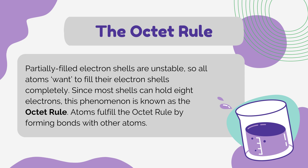The octet rule, also known as the rule of eight, is a fundamental principle in chemistry that governs the behavior of atoms during chemical bonding. It states that atoms gain, lose, or share electrons in chemical reactions in order to achieve a stable electron configuration similar to that of the noble gases, which typically have eight valence electrons. This stable configuration corresponds to a filled outer electron shell, often referred to as an octet. By achieving this configuration, atoms become more stable and less reactive, thereby forming chemical bonds to attain the electron arrangement of noble gases.